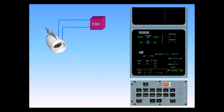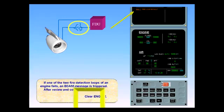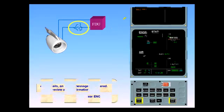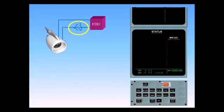If one of the two fire detection loops of an engine fails, an ECAM message is triggered. After review and confirmation, clear engine. Because of the system redundancy, fire detection is still fully operational. Let's see what happens when you lose the second loop.